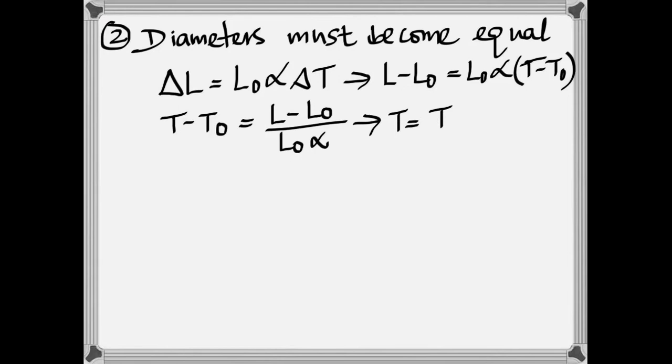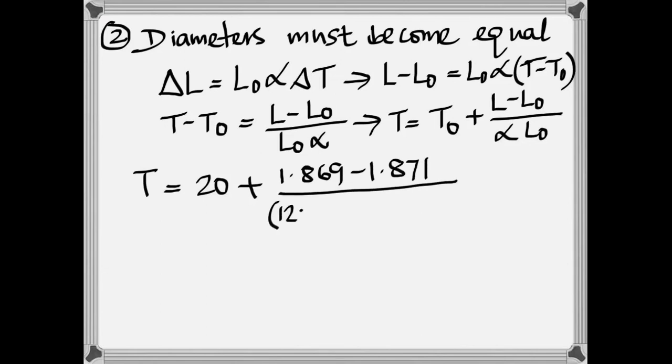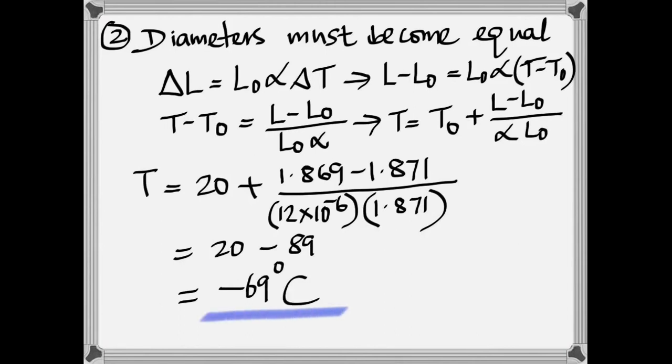And then get the temperature T is T0, which is the initial, plus that quantity. So therefore, it has to be cooled down to negative 69 degrees Celsius.